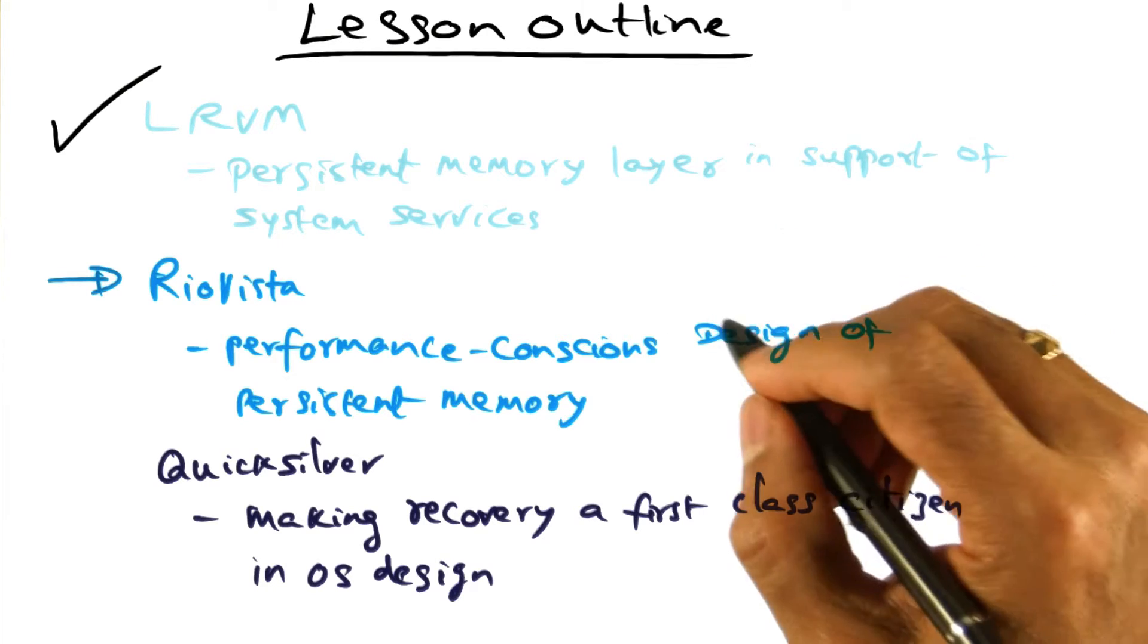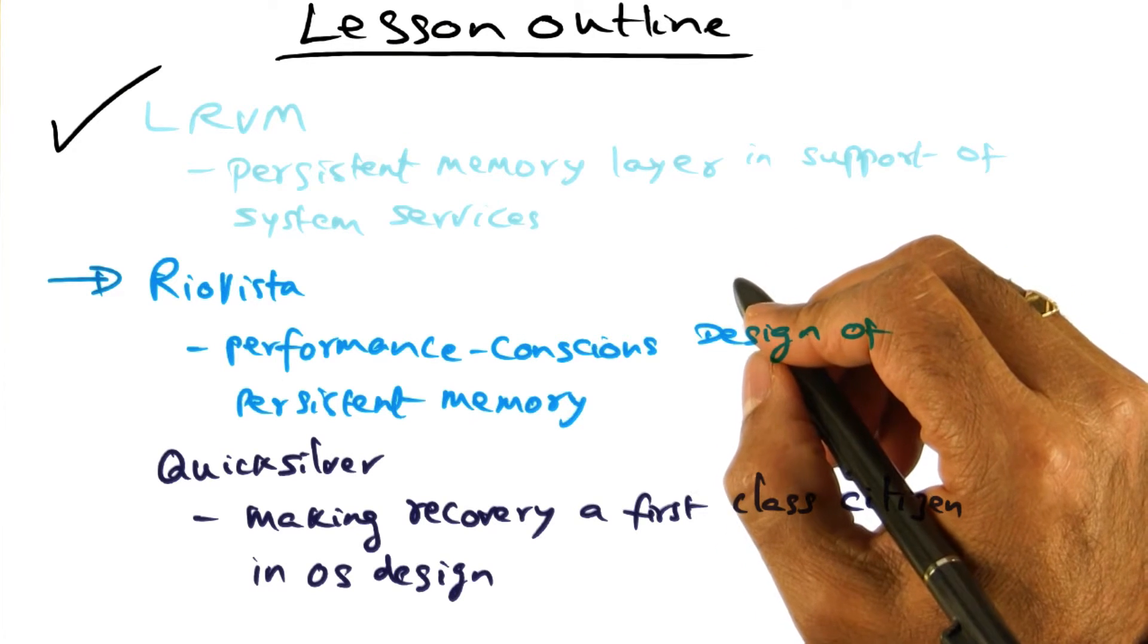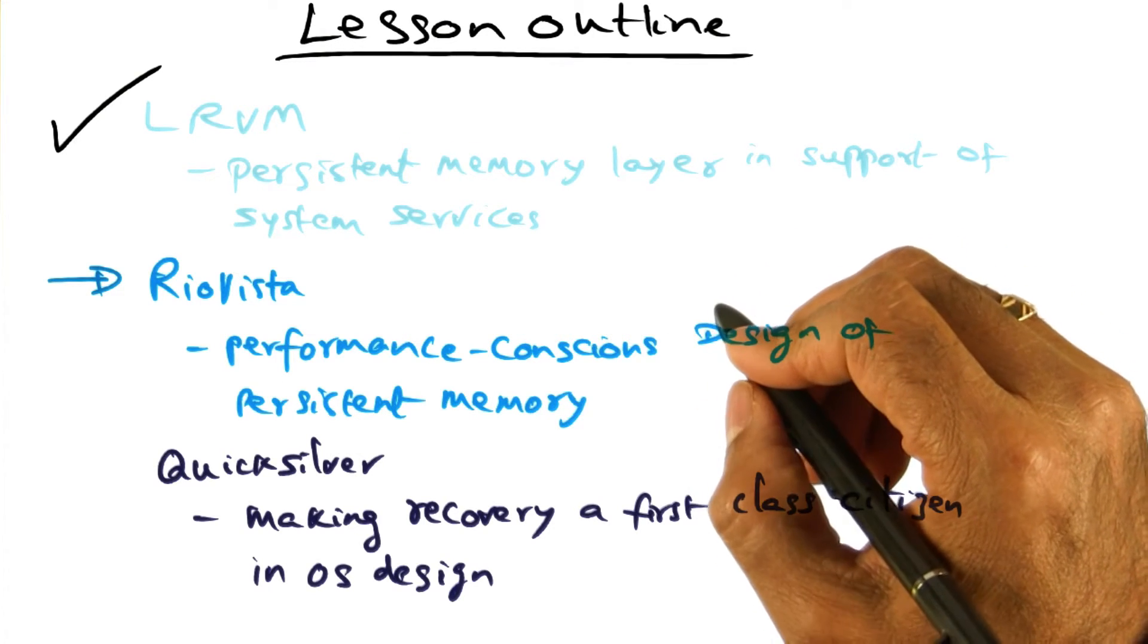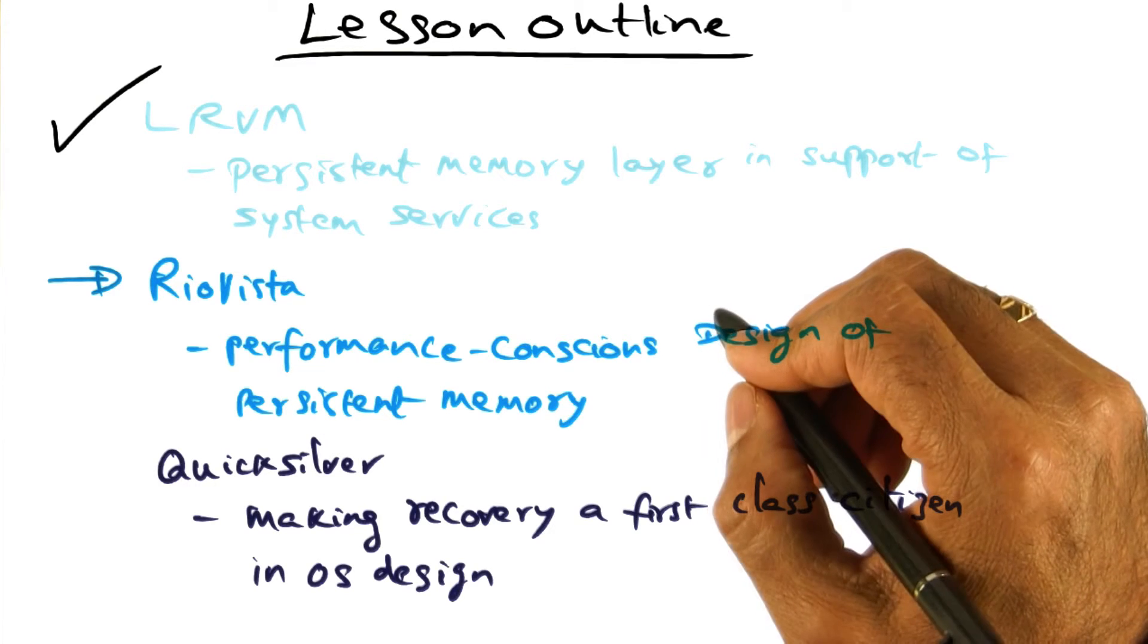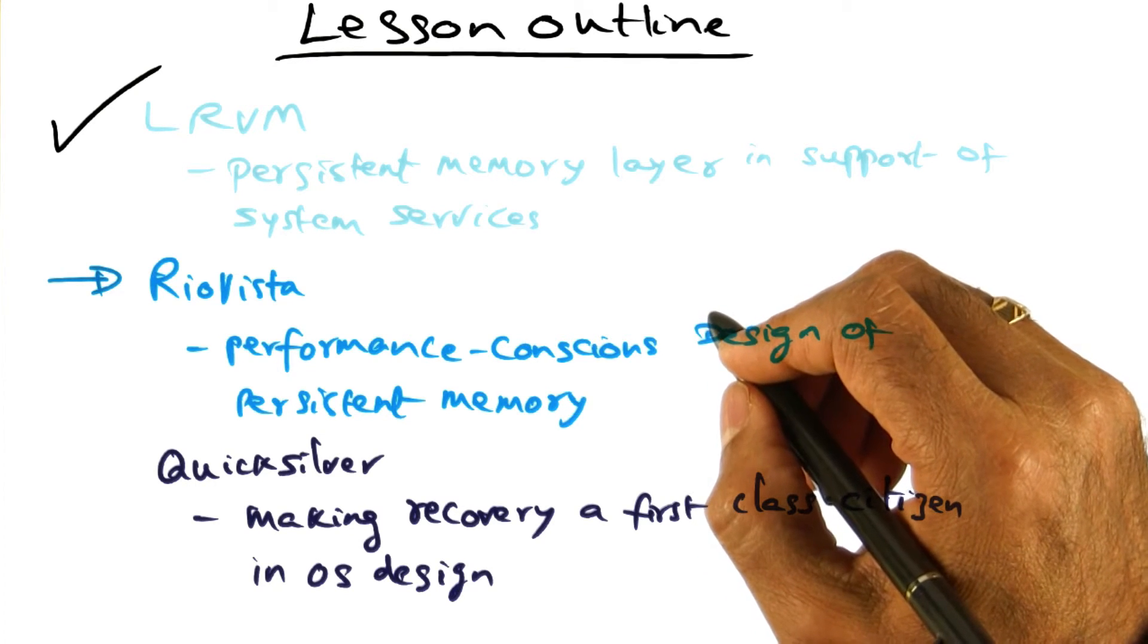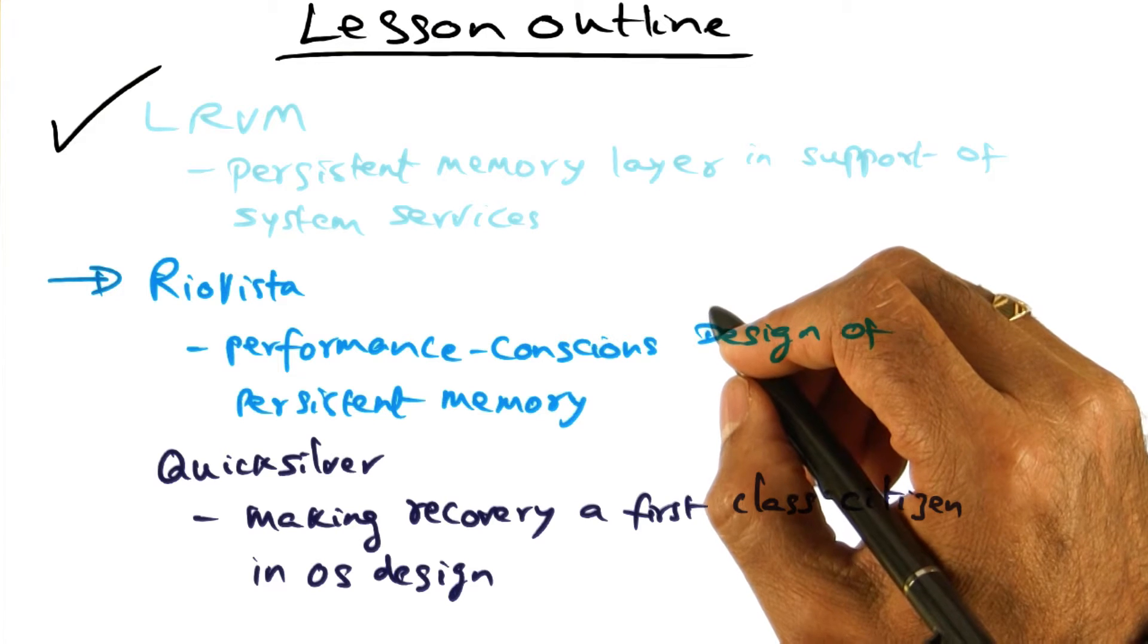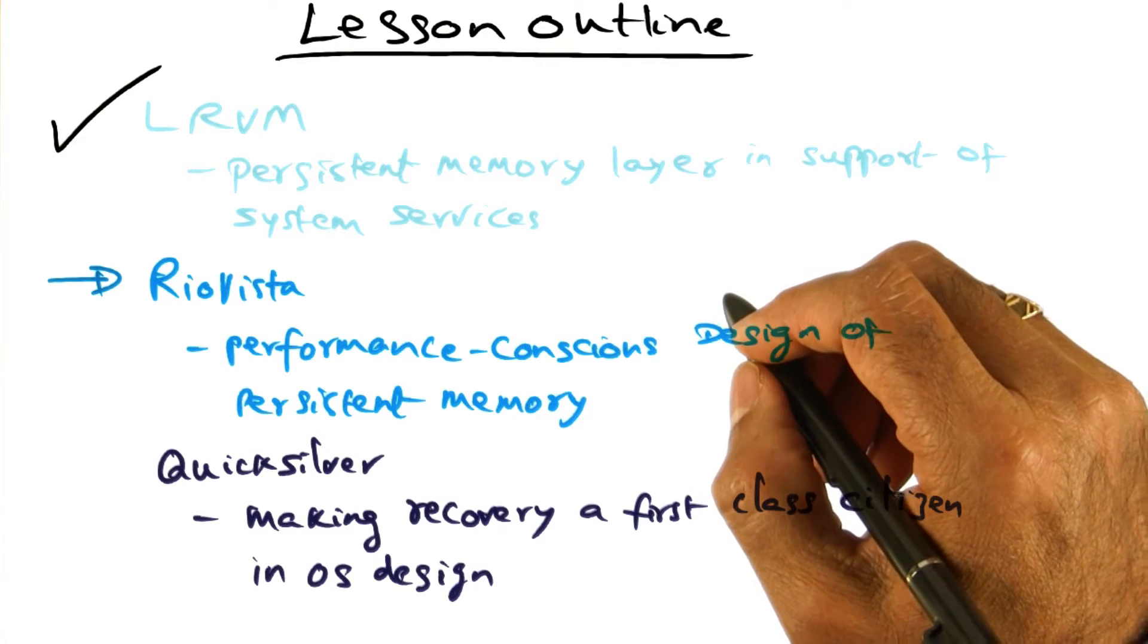In LRVM, changes to virtual memory are written as redo logs at the end of a transaction. And these redo logs are forced to the disk at the end of the transaction as commit records of changes made to virtual memory.